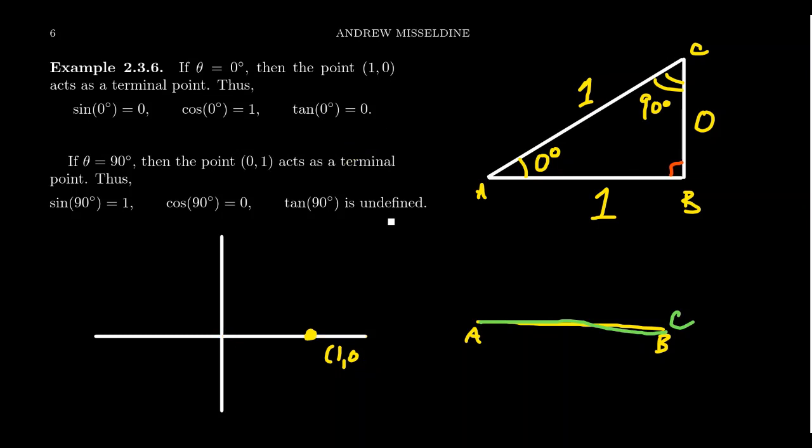Similarly, we could do the same game for a 90-degree angle using the point 0, 1. The ray emanating from the origin through that point forms 90 degrees with the positive x-axis. r is 1, x is 0, and y equals 1. Sine is y over r, so 1 over 1, which is 1. Cosine is x over r, which equals 0 over 1, which is 0. Tangent is y over x, which gives 1 over 0, which is undefined.